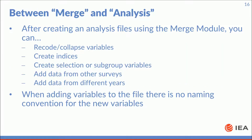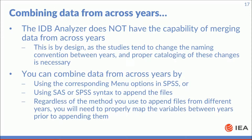After you create an analysis file using the merge module, you'll be able to recode or collapse variables, create indices, create selection of subgroup variables, add data from other surveys, and add data from different years. When adding variables to the file, there's no naming convention for the new variables. The IDB Analyzer does not have the capability of merging data from across years — this is by design, as the studies tend to change the naming convention between years and proper cataloging of these changes is necessary. You can combine data from across years by either using the corresponding menu options in SPSS or using SAS or SPSS syntax to append the files. Regardless of the method you use, you will need to properly map the variables between years prior to appending them.